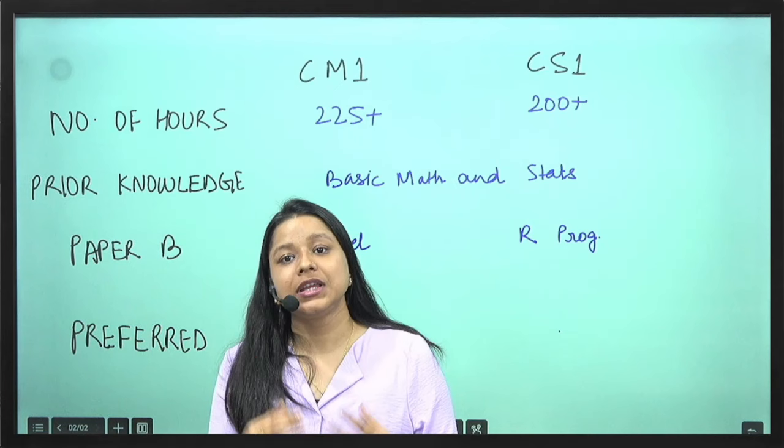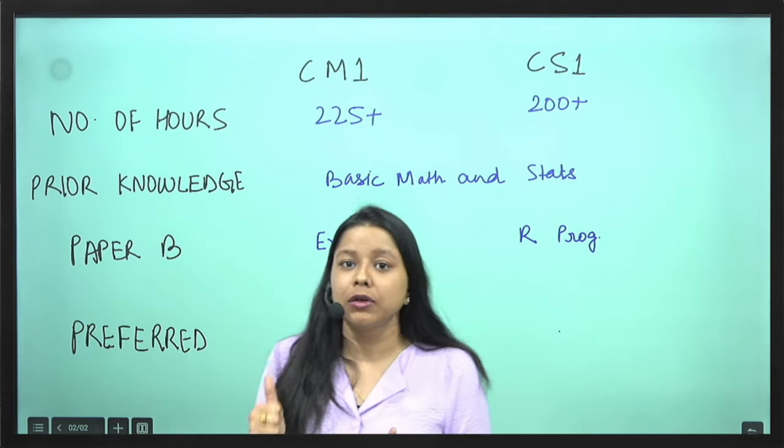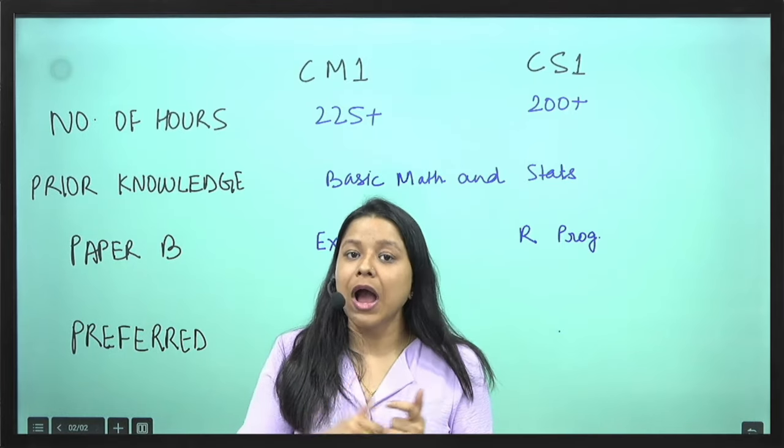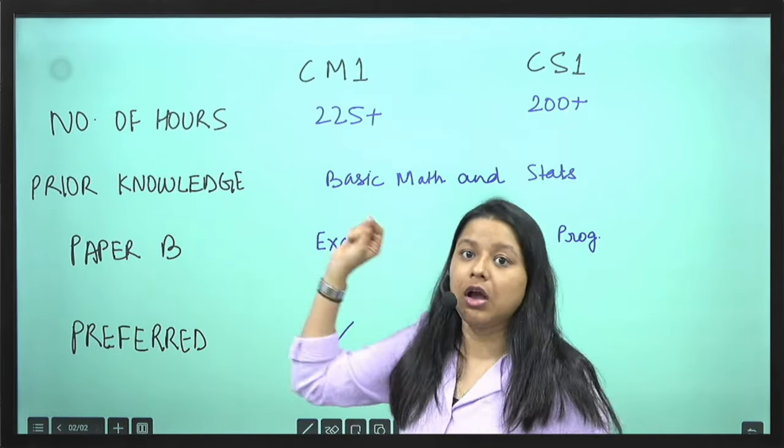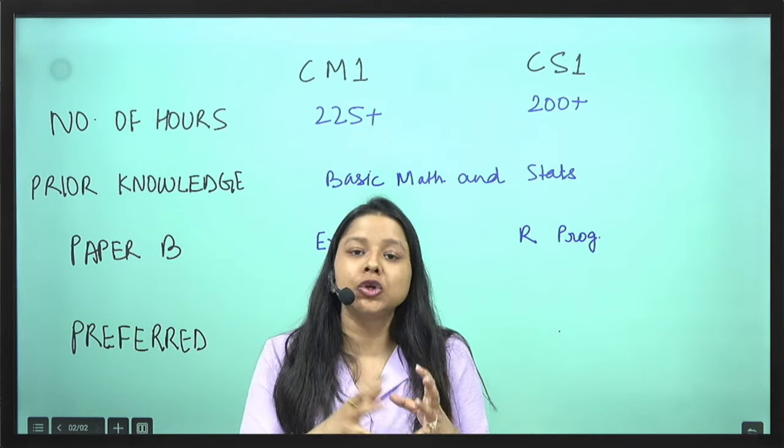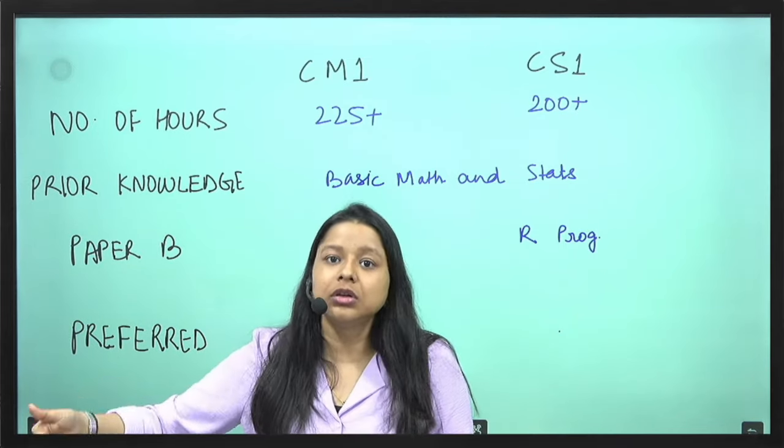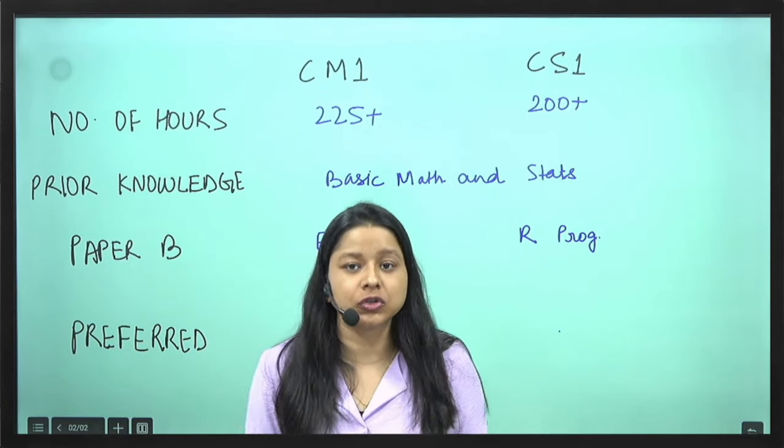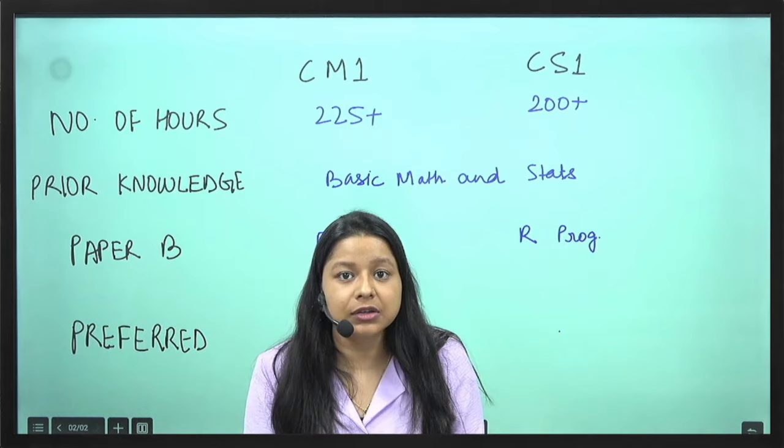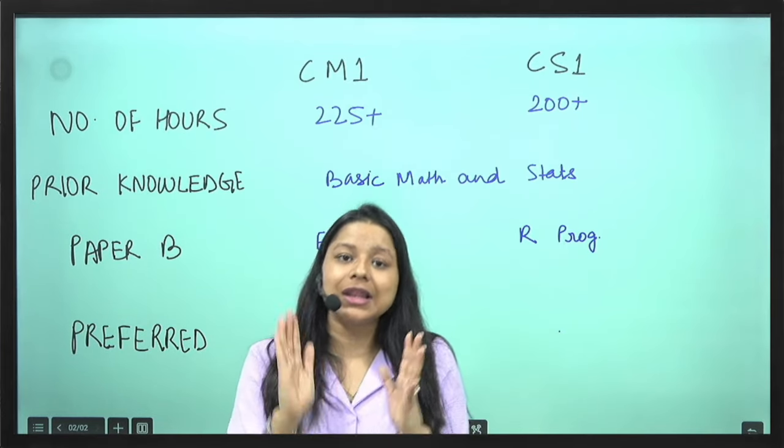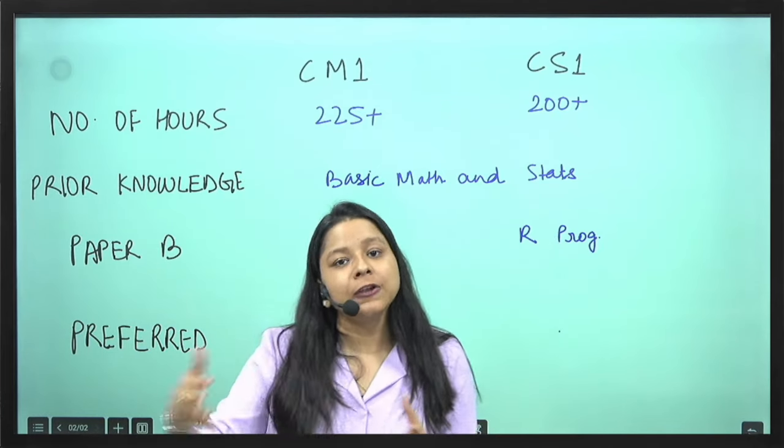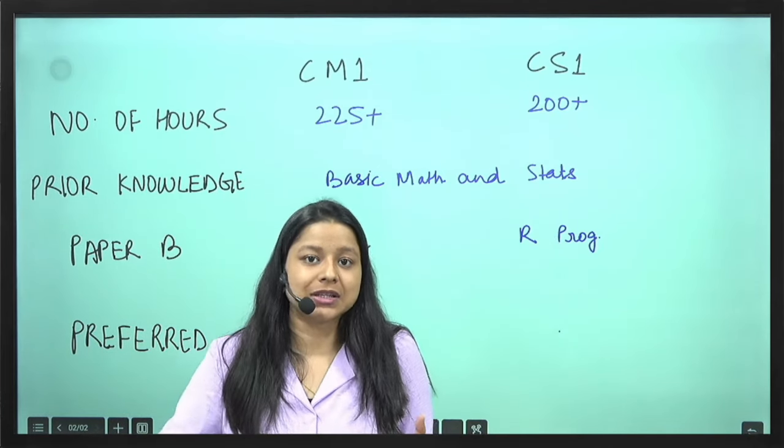Why are we suggesting students to start with CM1 now? Because if you are not liking a paper like CM1, then it might be so that you might not like the different papers moving forward in actuarial science. This is a very subjective case. But generally, if you are not liking CM1, very likely you might not like the other papers as well.